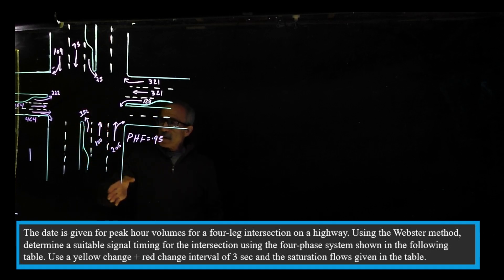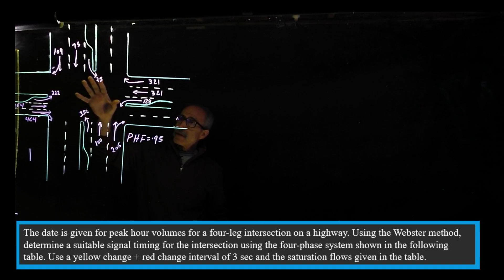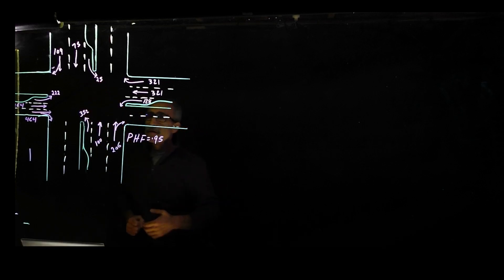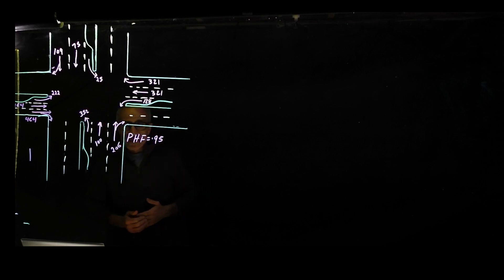For example, here going north we have 100 going straight, 206 going straight and right, and then left turn we have 352 and so on and so forth. We're going to go ahead and find out what is the green time for each phase.